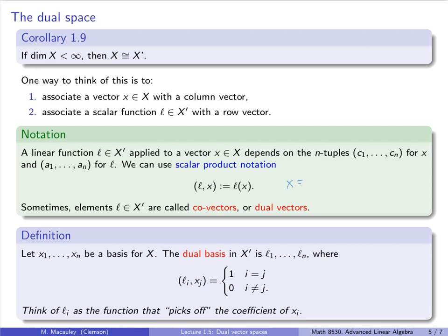So if x is A1x1 plus Anxn, then L1 of x is just A1. L1 just goes in here and picks off the coefficient. An is just Ln of x. So Ln just picks off the coefficient of xn. So if we use our column and row vector notation, then what we're really doing is x1 is just e1, in other words, a vector that has all zeros except in position 1, and xn is all zeros except in position n,